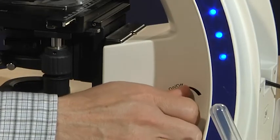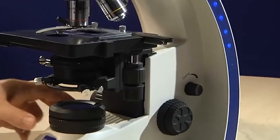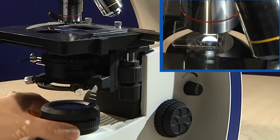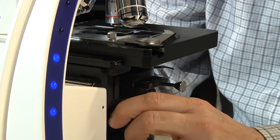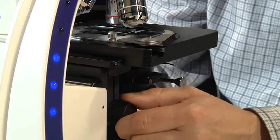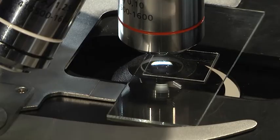After switching on the light, we open the luminous field diaphragm as far as it will go. We now adjust the height of the condenser. The front lens should be a few millimeters away from the slide.